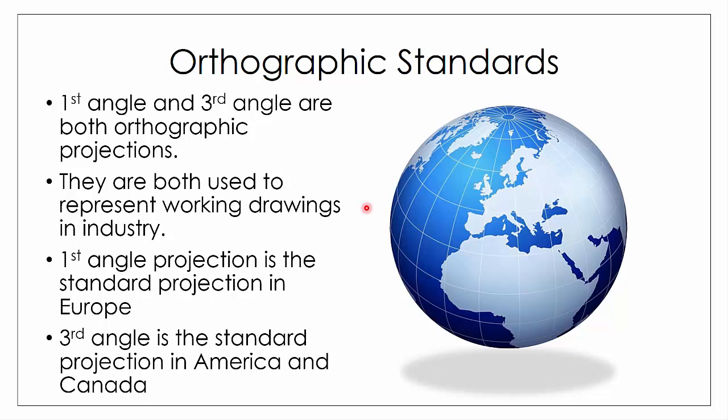Historically speaking, first angle was the original projection system. It was devised by a Frenchman called Gaspard Monge, and when he devised orthographic projection he devised it as first angle projection. It wasn't until around World War One that manufacturing companies in America began using third angle projection, and they developed it as their standard projection system. So often it depends on whether your company works predominantly with European or American companies.